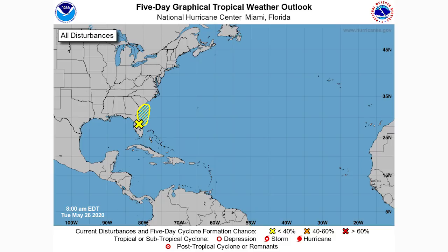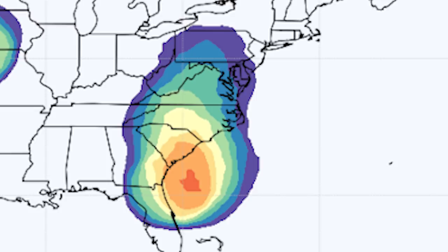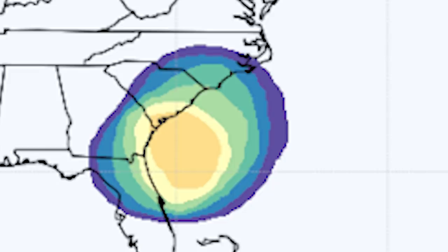Now we'll get into our modeled guidance. Looking at the European model's probabilities of a tropical depression and tropical storm — they are very high. In that orange and red area, we're at a 70 to 90 percent chance of tropical depression development. That deeper red area just south of South Carolina shows an 80 to 90 percent chance of this one becoming at least a tropical depression. When I saw this, that's when I knew I had to make a video. The tropical storm probabilities on this model show about a 60 to 70 percent chance — better than not — so we are looking at a real chance for development.